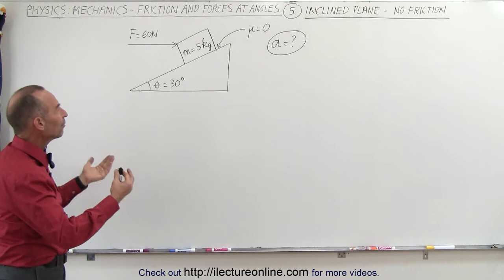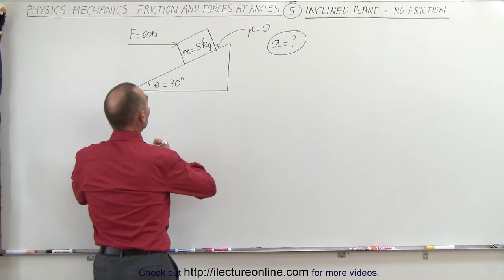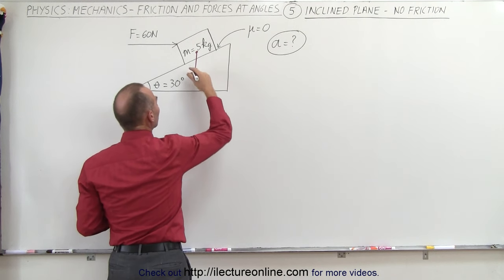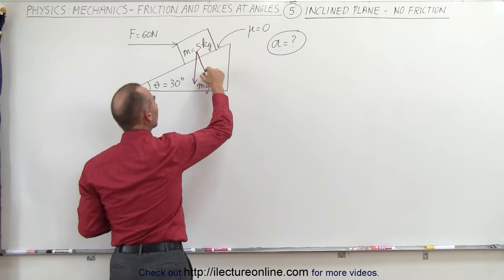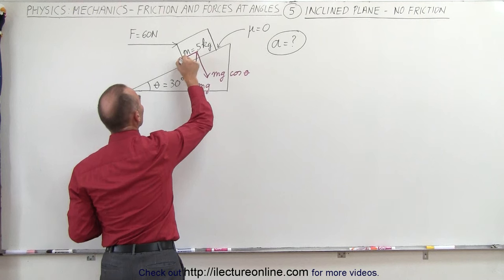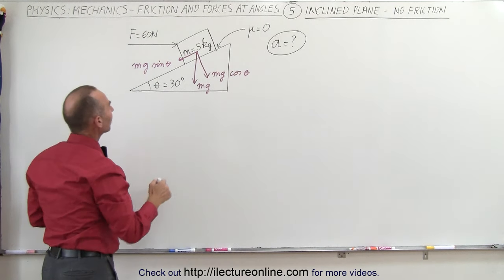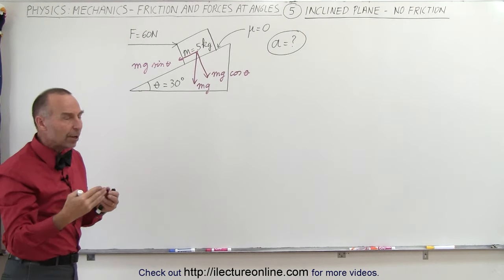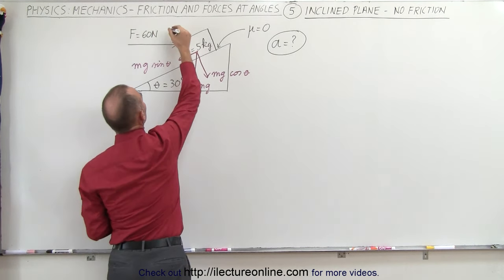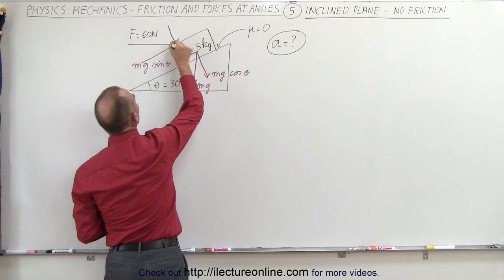So what do we do here? We need to identify all the forces on the block. We'll start with the usual: we have the force of gravity pulling straight down, which is mg. Since we're on an inclined plane, we'll have the perpendicular component, which is mg times the cosine of theta, and we'll have the parallel component, which is mg times the sine of theta. We'll take the applied force and split it into two components: one parallel to the plane and one perpendicular to the plane.